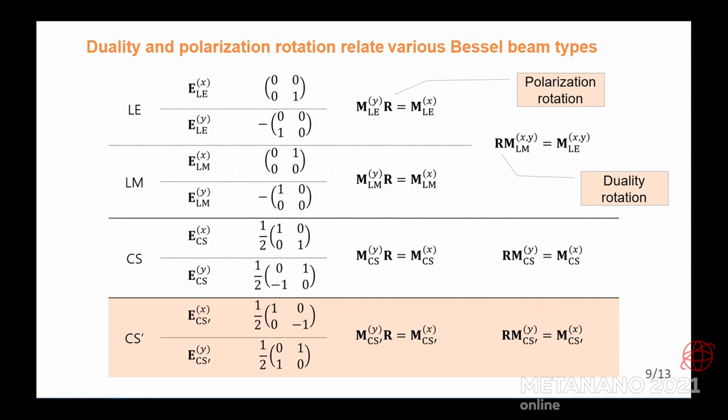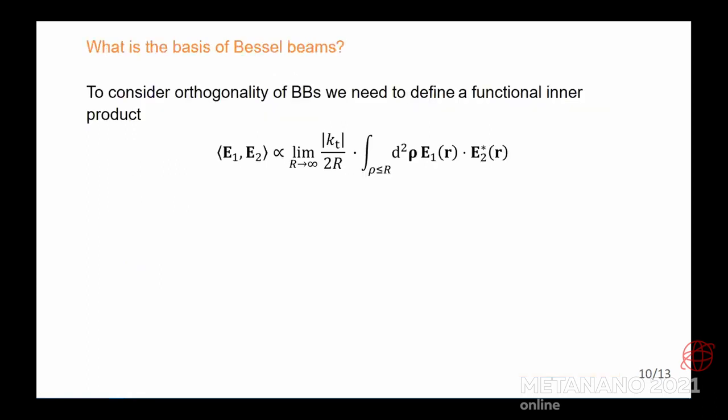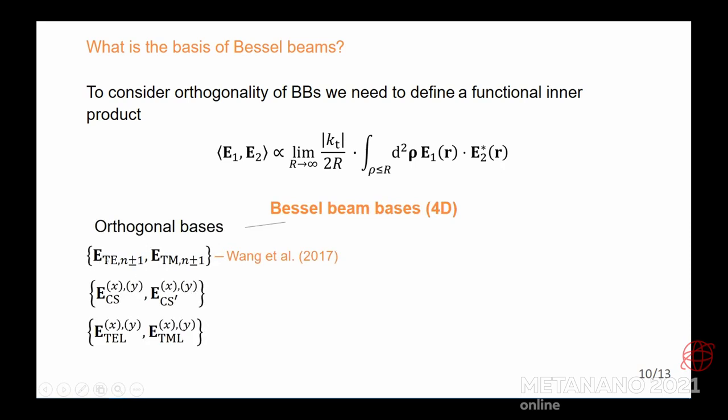There's not all the known Bessel beam types, of course. And one can ask a question, what is the basis of all these Bessel beam types? To answer these questions, it's usually helpful to consider orthogonality of different Bessel beam types. But there is a problem, because we cannot do this like for plane waves. We have to use some kind of functional inner product. In our work we introduce a new inner product for Bessel beams. Consider the fact that actually the field of Bessel beam types is non-square integrable. We use a special multiplier for this. Now we can define orthogonal basis for Bessel beam. And as you can see here, the first one actually was already discussed in the article by Wang in the 1970s.